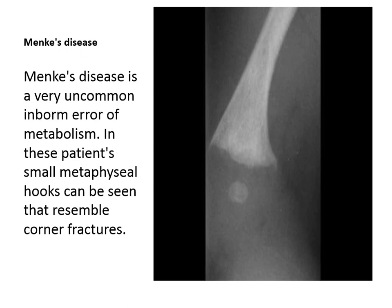Menkes disease is a very uncommon inborn error of metabolism. In these patients, small metaphyseal hooks can be seen — it looks like the corner fracture but it is not a fracture and is not displaced, just a small hook. There is also something characteristic about the hair of these patients — it may be kinky or unusual — which helps distinguish this disease.